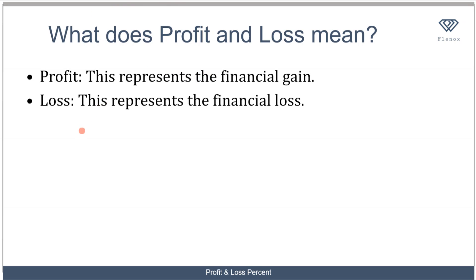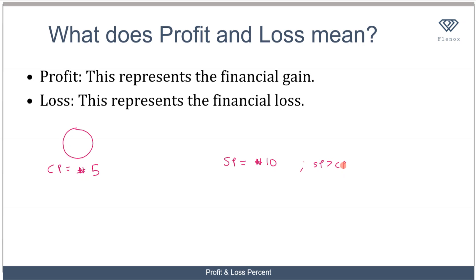In plain terms, imagine you have an orange and you bought it for 5 naira, so the cost price is 5 naira. Now you want to sell this orange for 10 naira. Since the selling price is greater than your cost price, you are making a profit. Your profit is the selling price minus the cost price, which is 10 minus 5, equal to 5 naira.